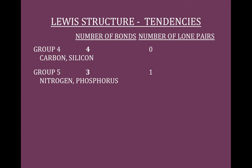Because Lewis structures apply to covalent bonding, we're heading toward the non-metal side, which is why we go from Group 4 to Group 5. When I look at Group 5, nitrogen and phosphorus should have three bond electrons and one lone pair. When you're done, you should see they have three bonds and a lone pair left over.